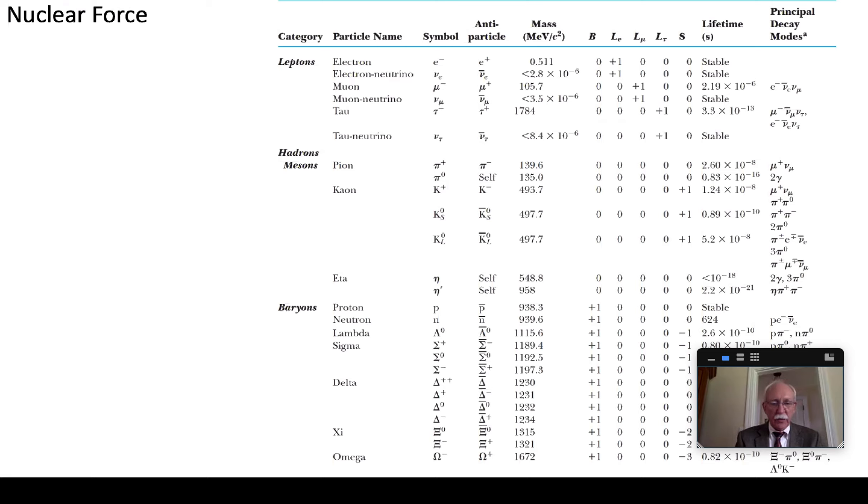Now the detectors involved in these experiments in the 50s were primarily the bubble chambers. Most of them used liquid hydrogen but not all of them. Some used liquid propane.